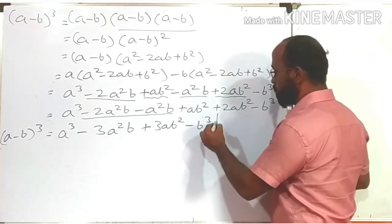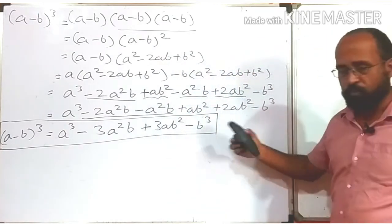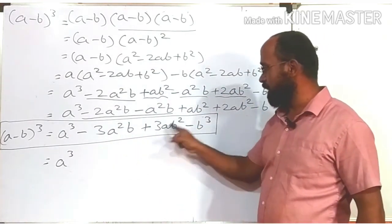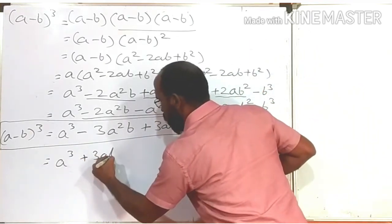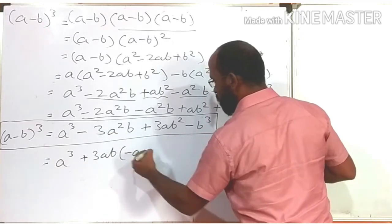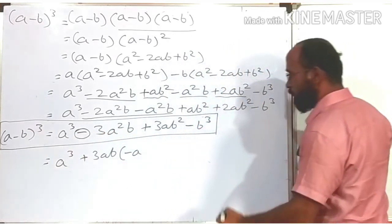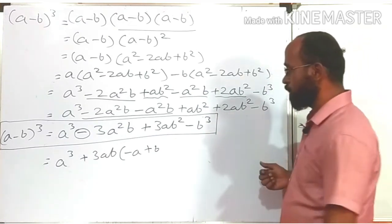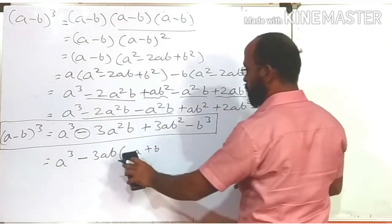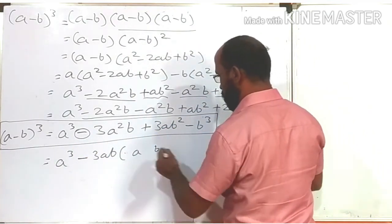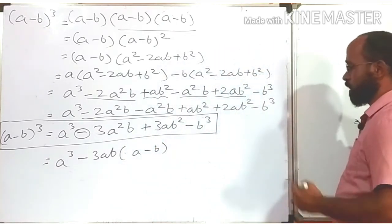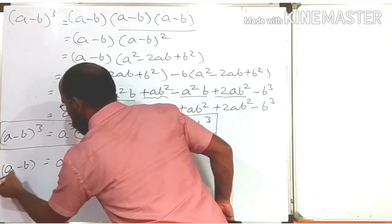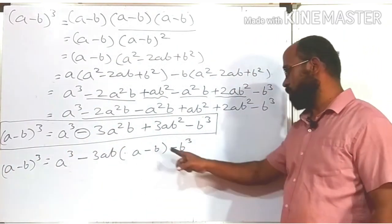We can also write an alternative form. Among the terms 3a²b and 3ab², we can take 3ab as a common factor. If we take out minus 3ab, then inside the bracket we get (a - b). So the second form of the formula is: a³ - 3ab(a - b) - b³. This is the second formula for (a - b)³.